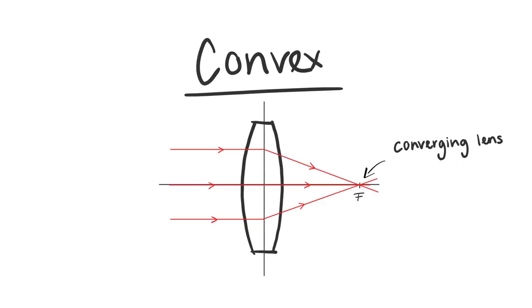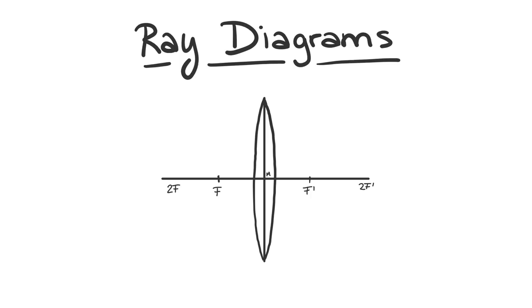Another important point for the lens is M, the center of the lens. In order to construct an image produced by a convex lens, you need so-called ray diagrams. All you need to know are the three following construction rules.